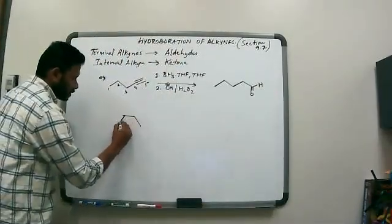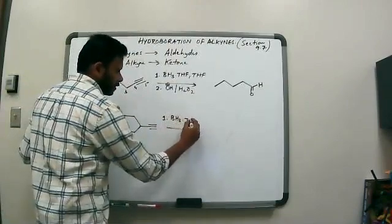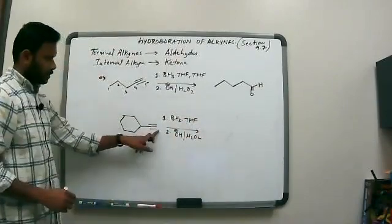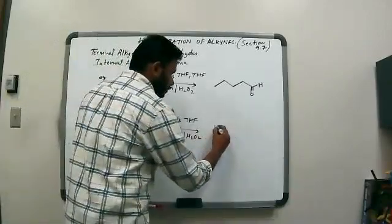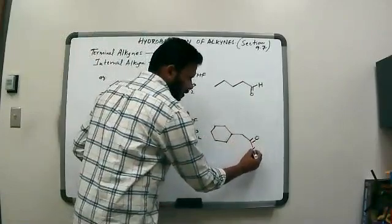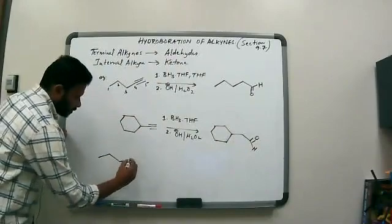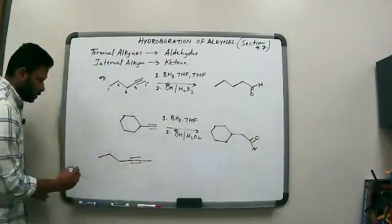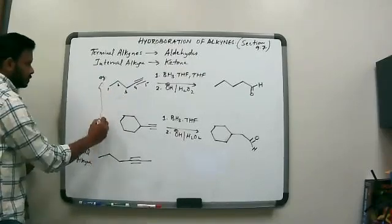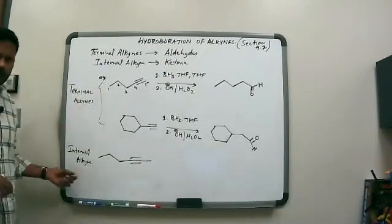Another example: let's use the alkyne based on cyclohexane we used before. When we do the same reaction — BH3/THF, then hydroxide with peroxide — the terminal carbon becomes the aldehyde. Our product is cyclohexane with one carbon and then an aldehyde. Now, if we have an example where the alkyne is internal, this is an internal alkyne.